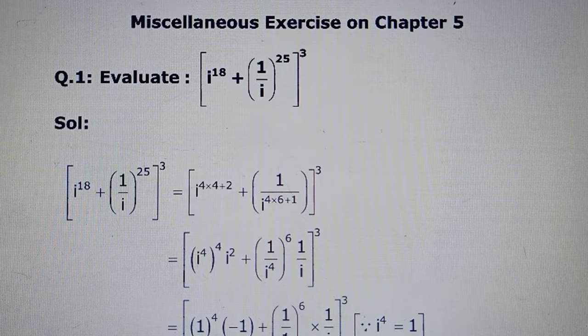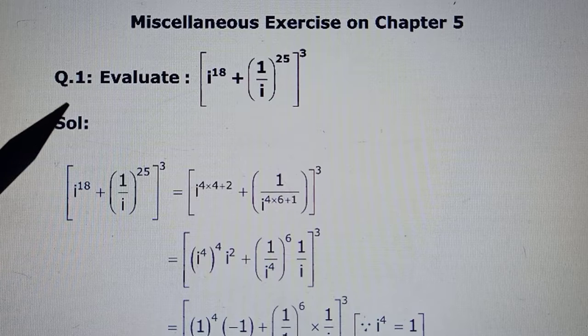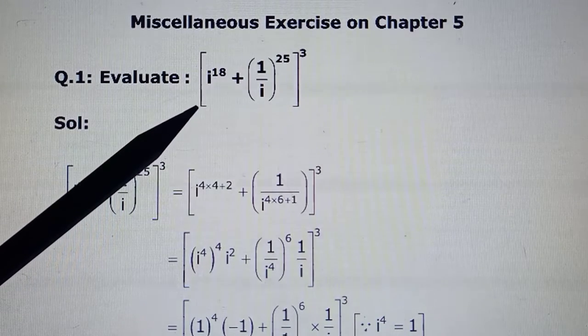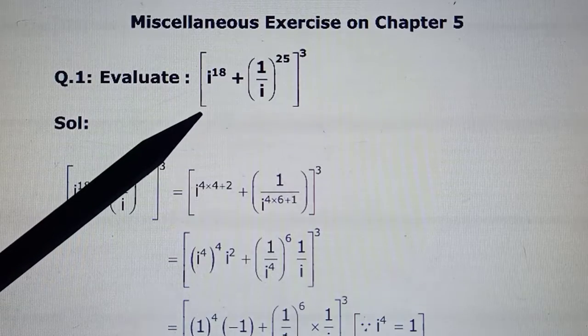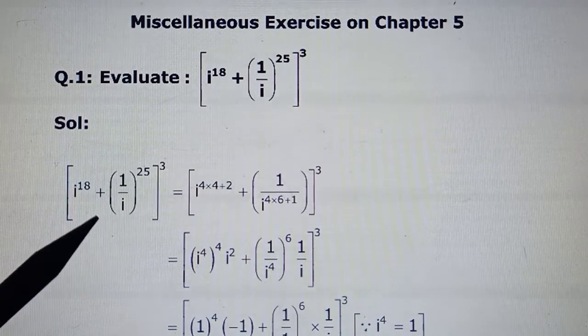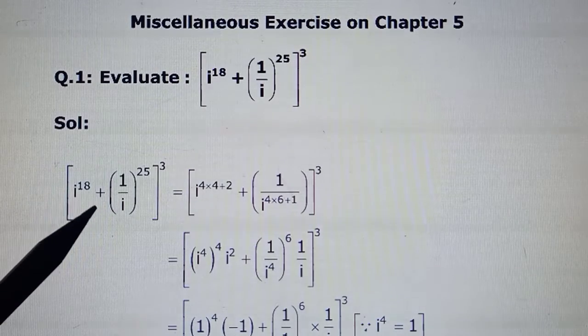Alright children, we have to take the miscellaneous exercise in Chapter 5 on complex numbers. So the first question here is asking you to evaluate the powers of iota. I had given a similar example earlier, so as we know, whenever we have any higher power of iota, we write it by trying to take off as many multiples of 4.